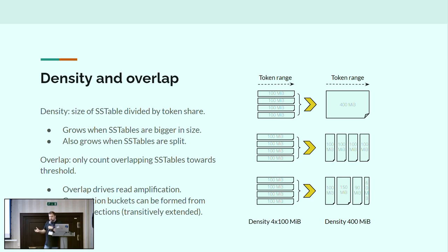In Cassandra we usually assume that partitions and tokens distribute data roughly evenly. When we use the token share as a divisor in this formula, if we split into four equal-size SSTables, each covers one-fourth of the original SSTable's token space, so the density is going to be 400 megabytes for each of the smaller SSTables — even though they're actually 100 megabytes in size. It doesn't matter where you split these SSTables because their density is going to be dependent on the position where you split them. Even so, these SSTables are still going to have the same density of 400 megabytes, which means they've been compacted a little bit more than the originals.